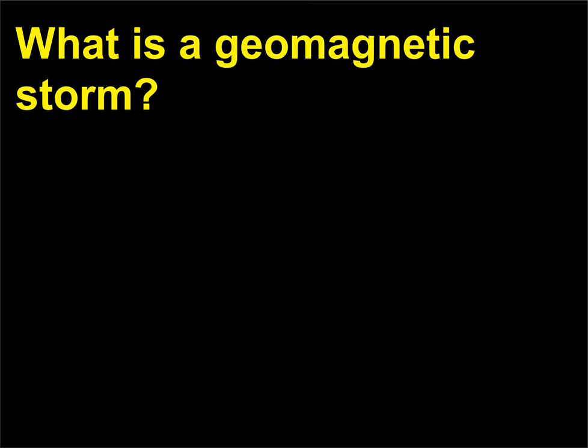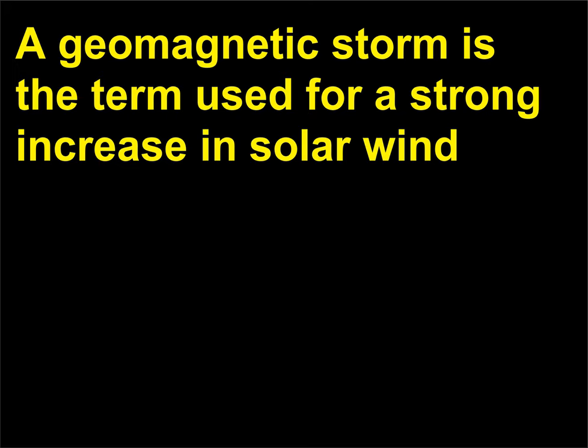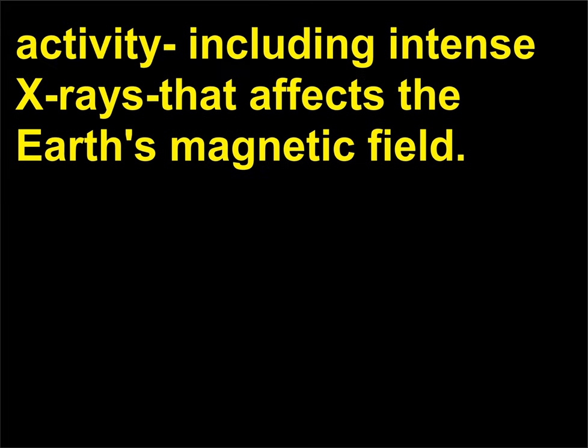What is a geomagnetic storm? A geomagnetic storm is the term used for a strong increase in solar wind activity, including intense X-rays, that affects the Earth's magnetic field.